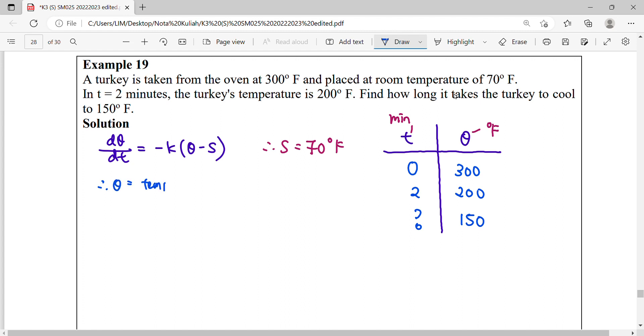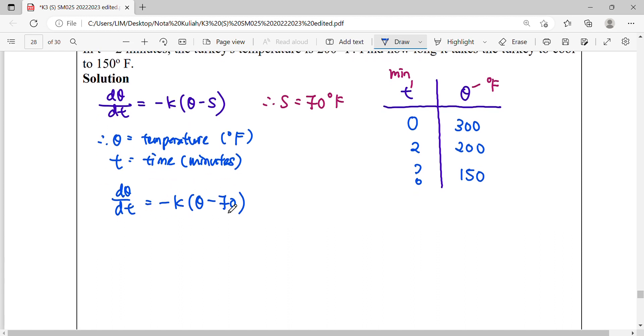Theta is temperature in Fahrenheit, T is time in minutes. We start using our model: dθ/dt = -k(θ - S) where surrounding temperature is 70. We can use the separable method, so move the theta factor to the left hand side: 1/(θ - 70) dθ. Multiply dt to the right hand side, then integrate both sides.